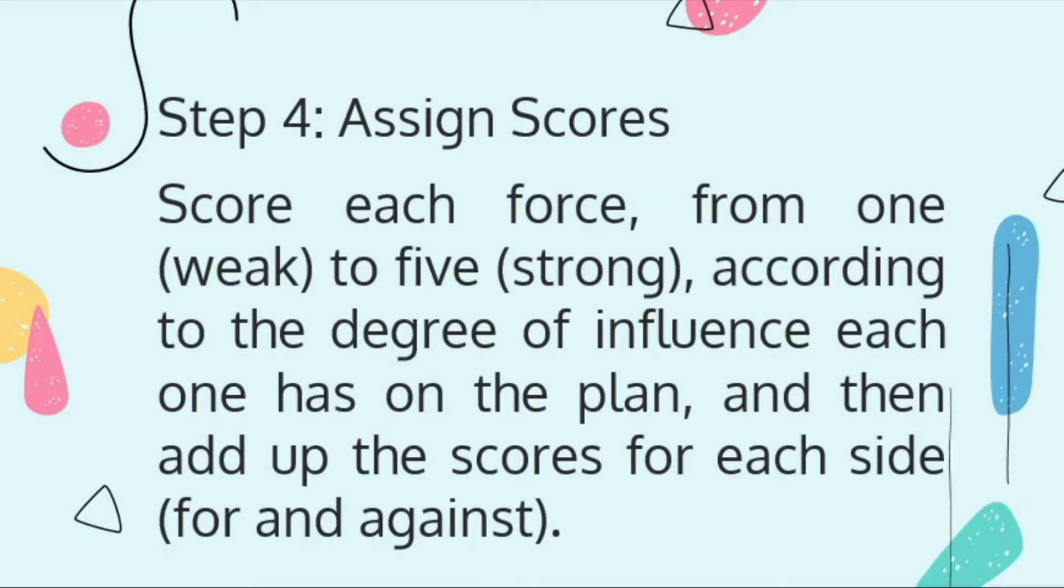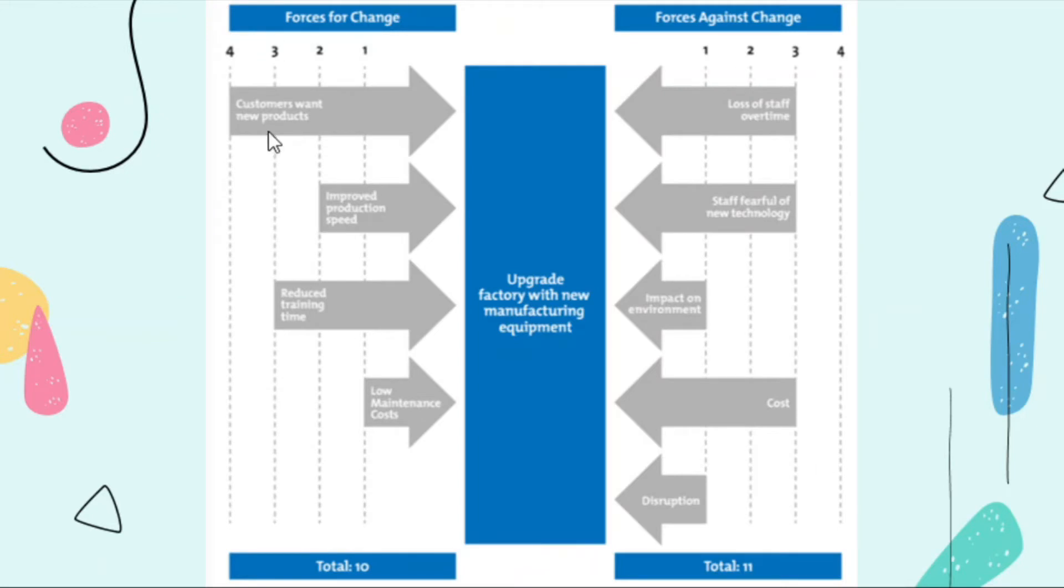Step four is you're going to assign scores. This is very subjective, based on your belief, based on what you believe in, how much this affects the change that you want. Score each force from one being weak and five being strong. It's like giving grades according to the degree of influence each one has on the plan, and then add up the scores for each side. I'll show you an example. Check each force and then check how much it affects the change that you want.